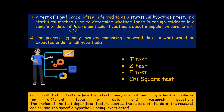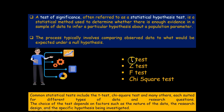Since a statistical hypothesis is always a statement about a population or a probability distribution, which we want to verify on the basis of information collected from the sample, this test of significance actually authenticates whether there is an existence of significant or non-significant difference, or whether the difference between the objects of comparison is real or by chance. The process typically involves comparing observed data to what would be expected under the null hypothesis.